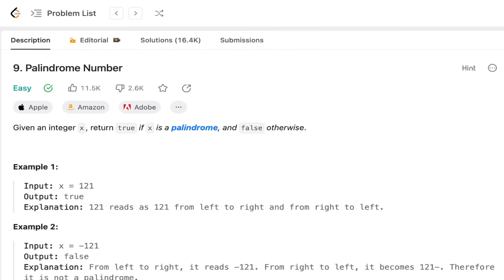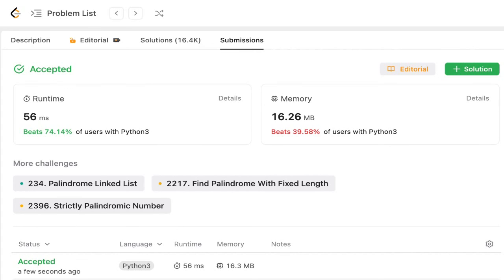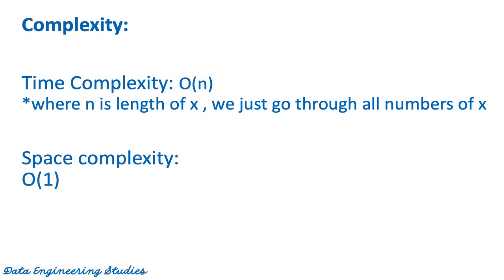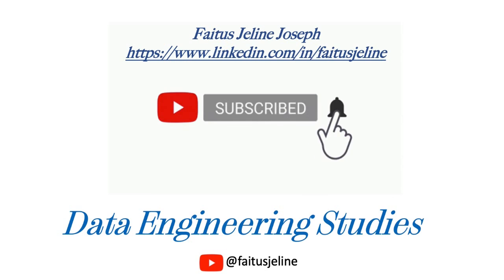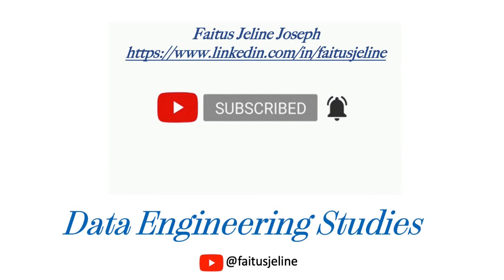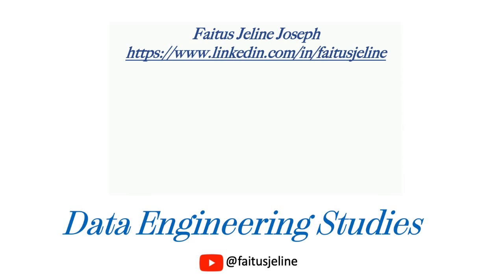That's pretty much it. The solution got accepted. The time complexity of this approach is O(n) where n is the length of x, because we are iterating through all the digits of x. The space complexity is O(1) because we are not using any extra space. I hope you liked this video. Please consider subscribing and I will see you in the next video. Thank you.